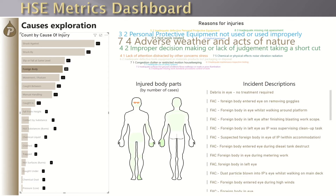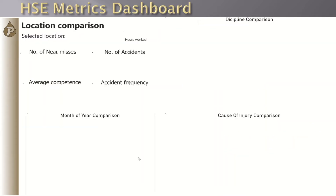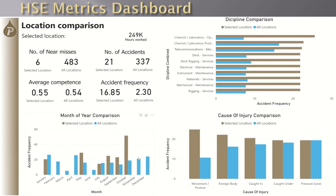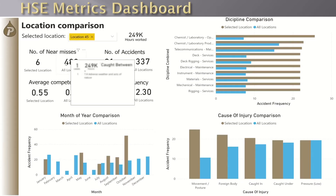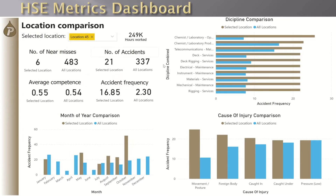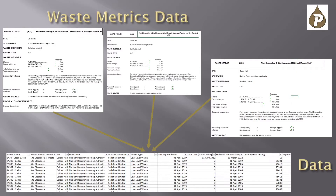The final page is for project managers who want to compare their own project performance against the rest of the company. They can select their location and view the comparison statistics. For example, we can see that our site has more chemical incidents and movement-related injuries compared to the rest of the company, so some action is required.